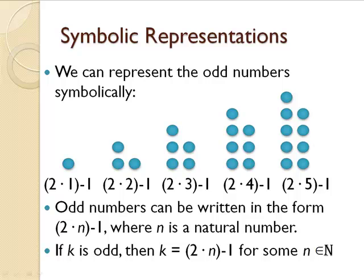In general, odd numbers can be written in the form 2 times n, minus 1, where n is a natural number. Or state it another way. If k is an odd integer, then k is 2 times n, minus 1, for some natural number n.